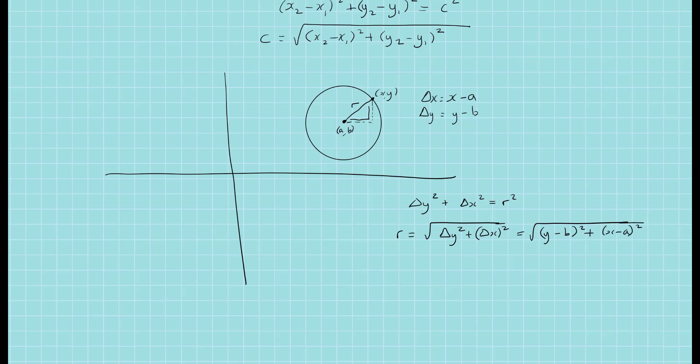I wrote it the other way around before with the delta x first and the delta y second, but it doesn't matter. Of course, you don't have to do that. You could leave the square on the R and just write y minus B squared plus x minus A squared on the right hand side. It's a matter of preference, but this is the equation of a circle.